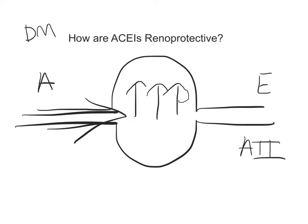This high pressure state in the kidney causes alterations in the basement membrane of your kidney and thus causes proteinuria. As you know, there should be no protein in your urine.